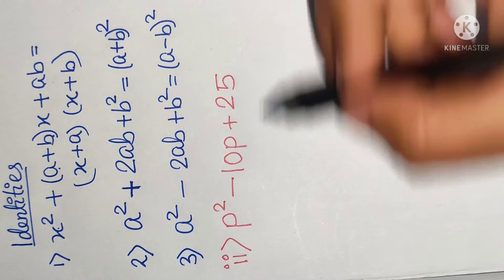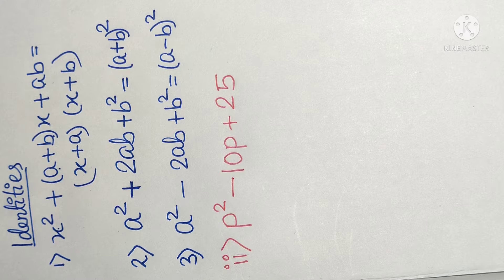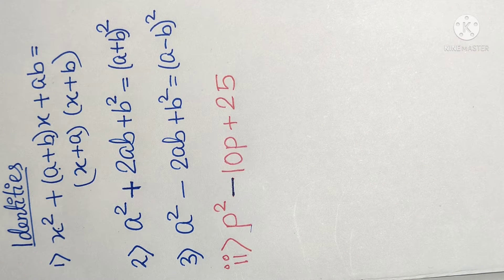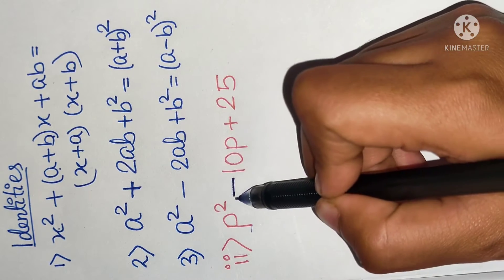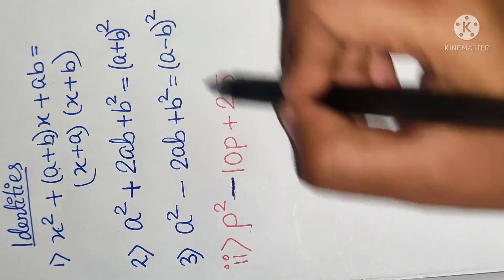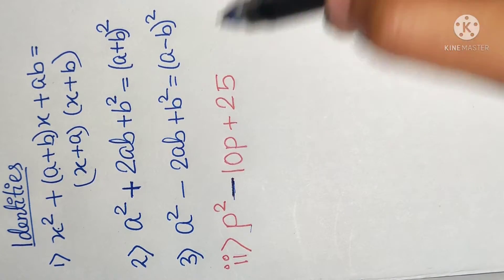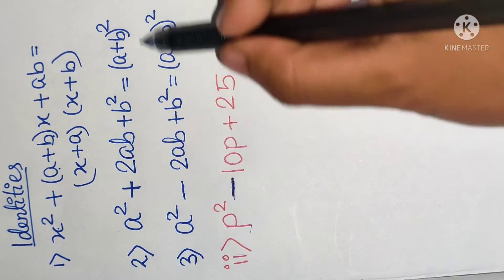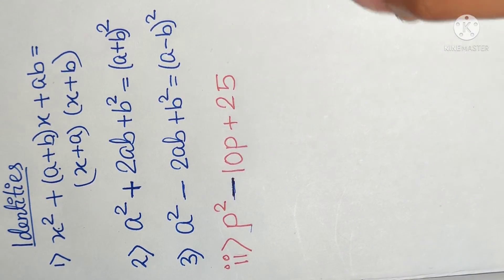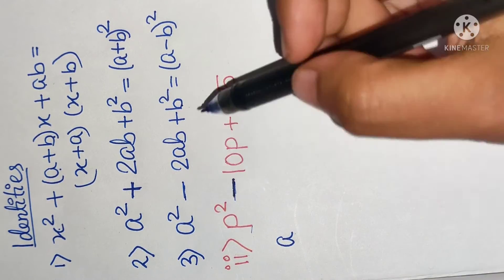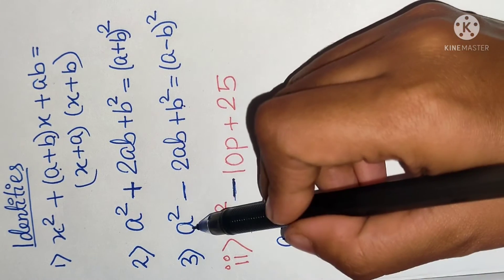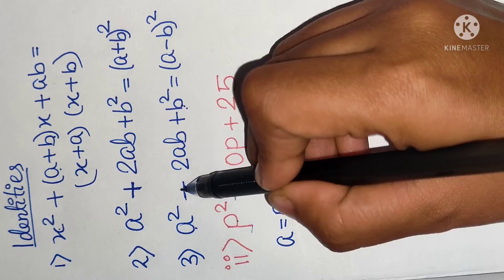Let's start with the next expression to be factorized. Can you find out the identity with which we can compare this given expression? The first thing to notice is the minus sign. Out of the three given identities, only one has minus. So we will try to compare with identity number 3.